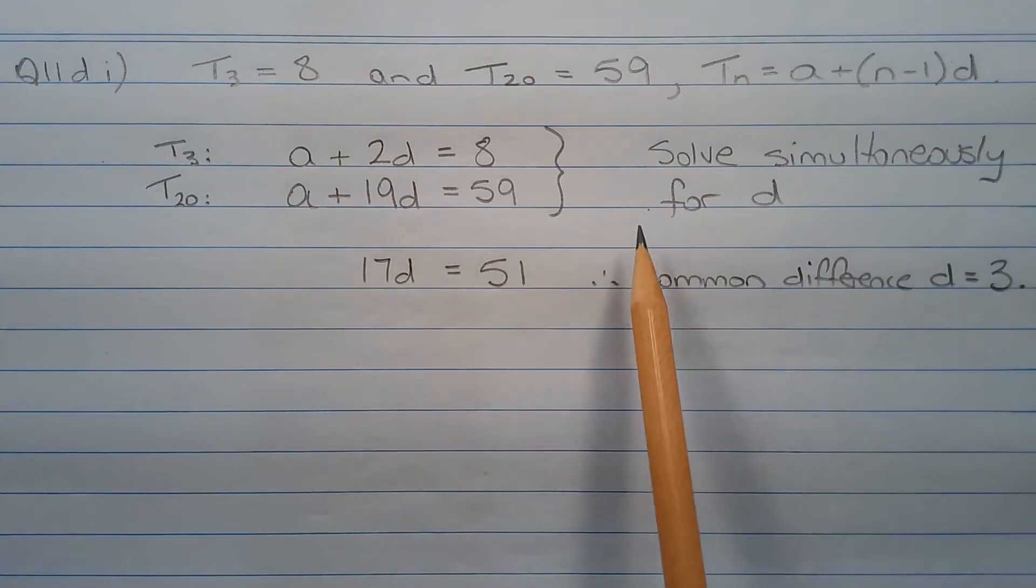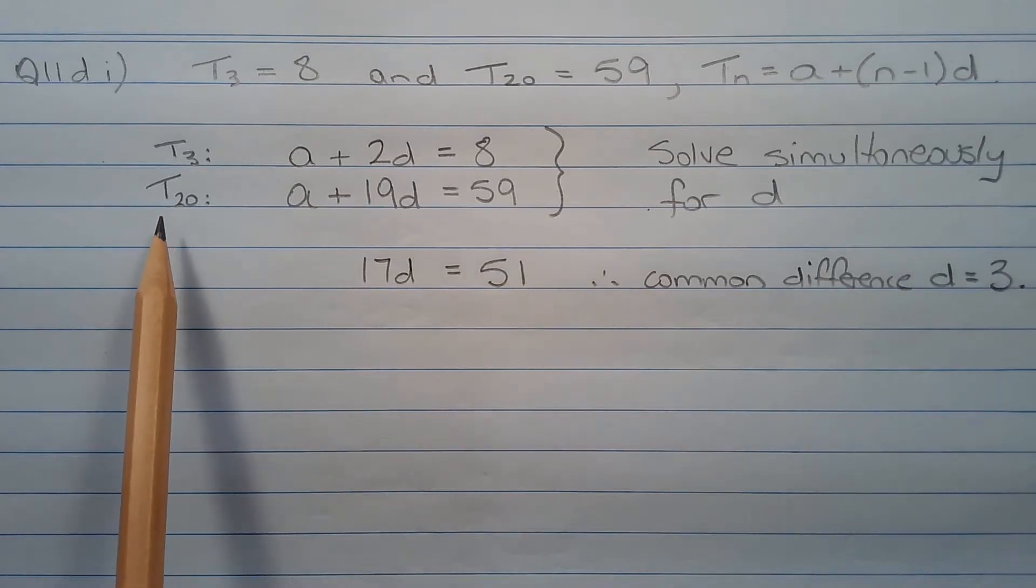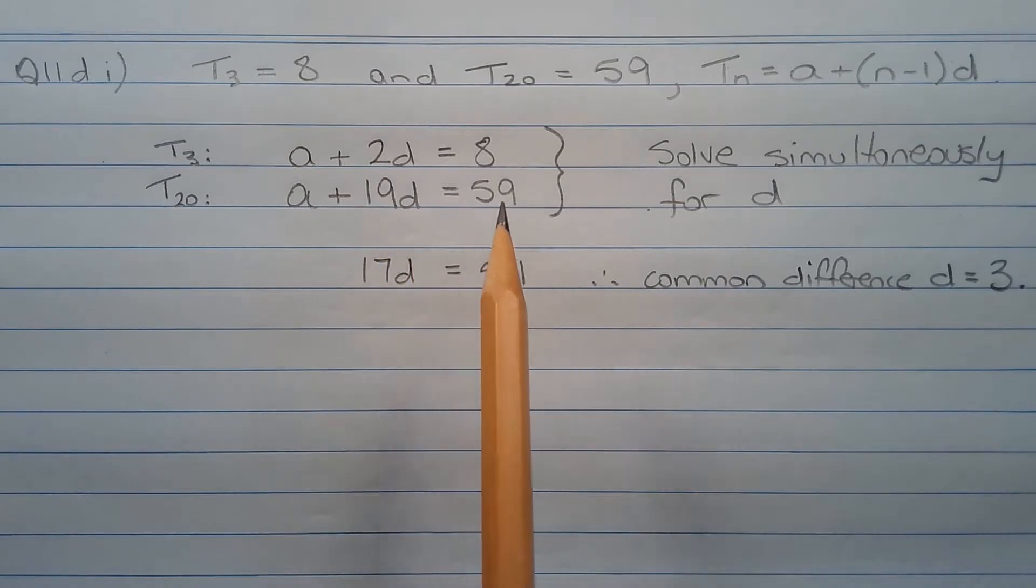We're going to solve simultaneously for d using the elimination method. So taking T20 and subtracting from that T3, so a plus 19d equals 59 minus a plus 2d equals 8.